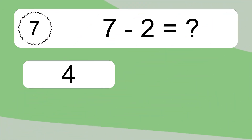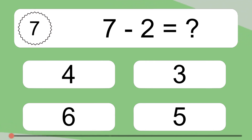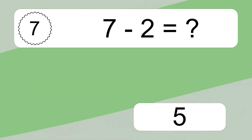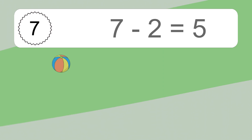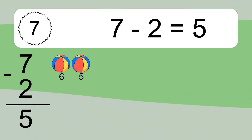7 minus 2 equals what? 7 minus 2 equals 5. Let's count it. 6, 5.